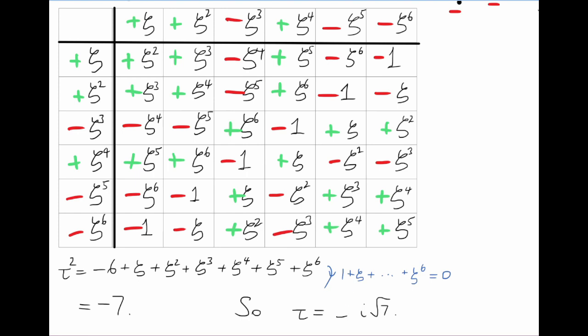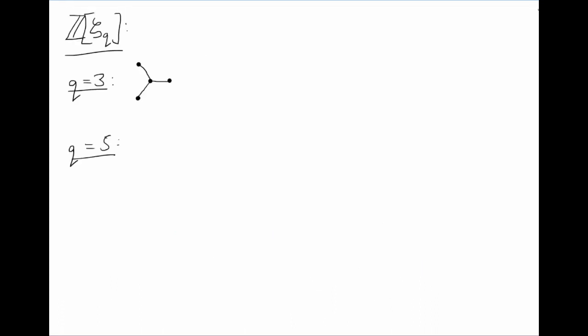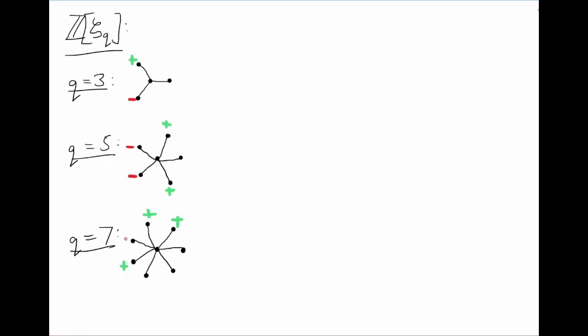So we've dealt with Z adjoin zeta_q for q equals 3, 5, and 7. In each case, we've assigned to all the non-trivial q-th roots of unity some plus or minus signs, added up the q-th roots of unity times those signs, called that number tau, and squared it. We get either plus q or minus q in each case. And maybe you've seen the connection between the first part and second part of this video — the plus and minus signs seem to be distributed along the roots of unity exactly as they were in the table at the start.